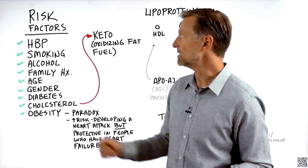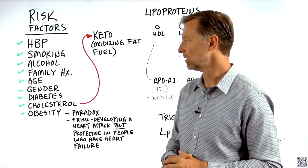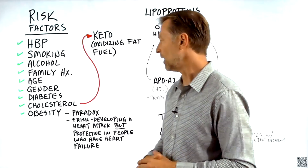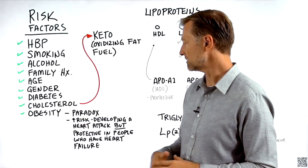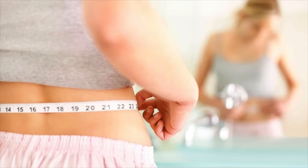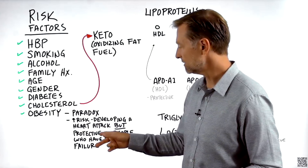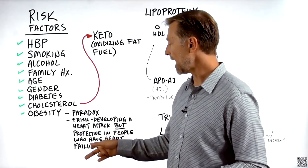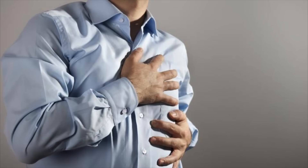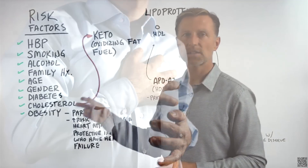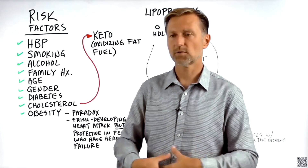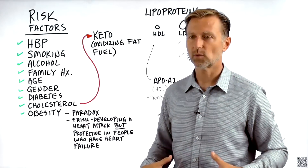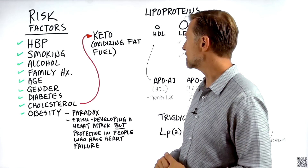When they talk about obesity being a risk factor, there's something called an obesity paradox, which is wild — because it is true that there is an increased risk of developing heart attacks if you have obesity, but having weight gain can actually be protective in those people who already had heart failure. Just because someone is overweight doesn't mean that's a risk factor. Personally, I think it's more of a visceral fat, not necessarily weight all over.